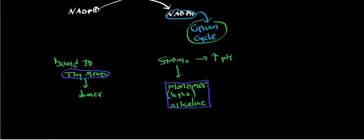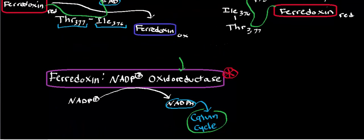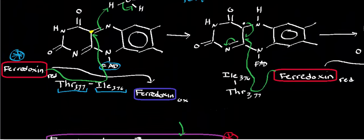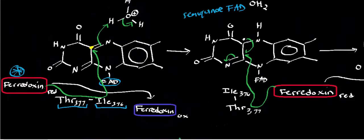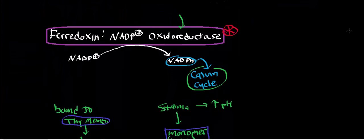Hopefully this process makes a little bit of sense. We've seen the mechanism of how ferredoxin leads to the production of NADPH through ferredoxin NADP+ oxidoreductase. In the next video, we're going to talk about the differences between cyclic and non-cyclic electron flow, and then we'll go into the Calvin cycle.